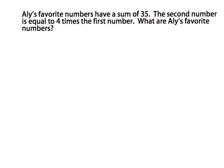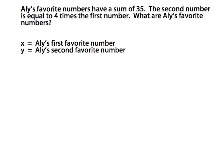We're going to do an example together. Our first step is to read the problem and to identify what are the two things that we don't know. Allie's favorite numbers have a sum of 35. The second number is equal to four times the first number. What are Allie's favorite numbers? The two things that we don't know are the two numbers that are Allie's favorites. So I decided to assign the first number x — x equals Allie's first favorite number — and y equals Allie's second favorite number.